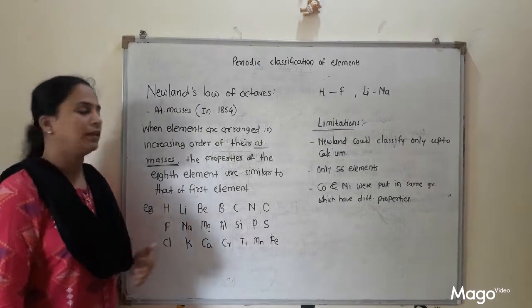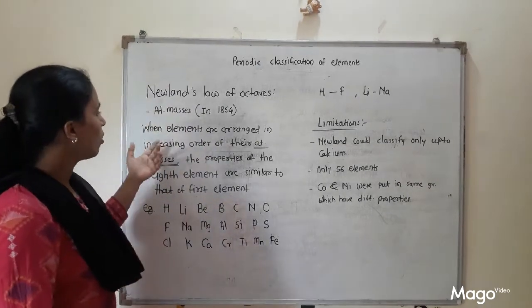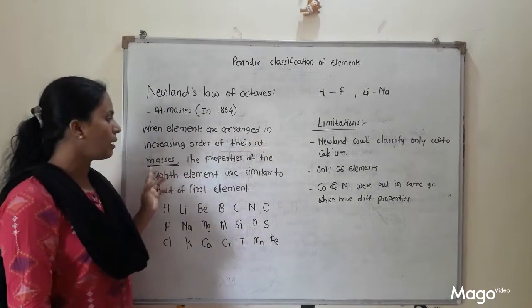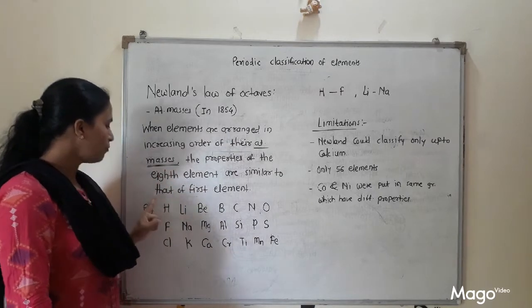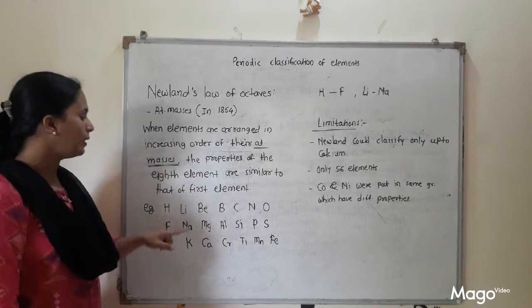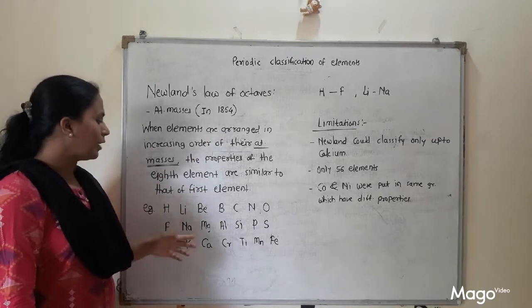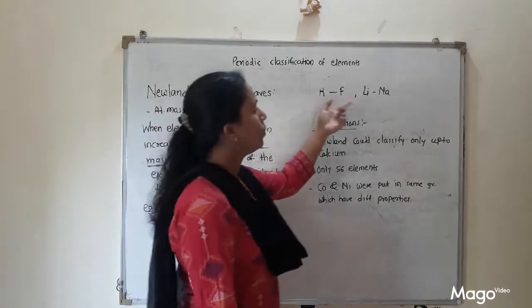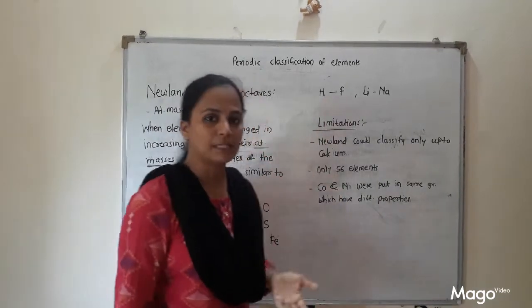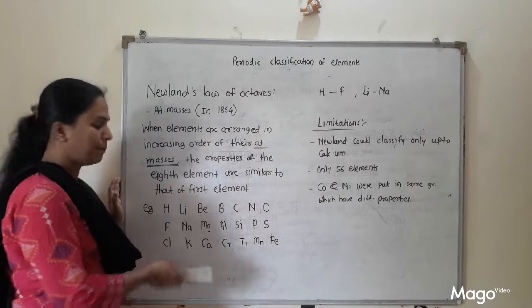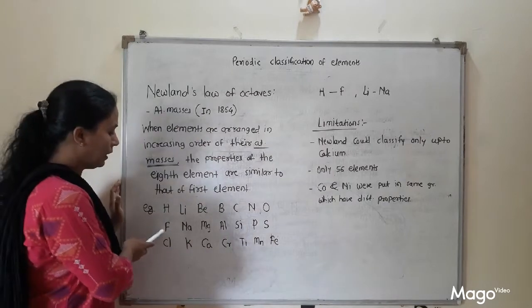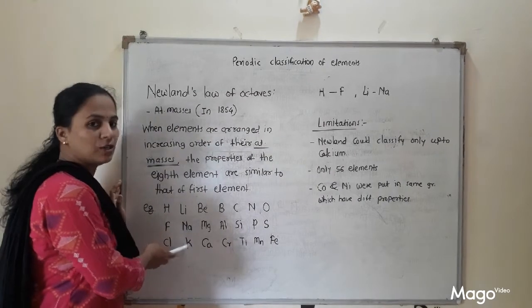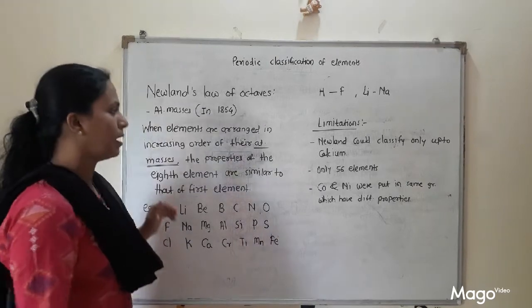In summary: when elements are arranged in increasing order of their atomic masses, the properties of every 8th element are similar to that of the first element. You can explain this law by taking any example — hydrogen and fluorine, lithium and sodium, or sodium and potassium.